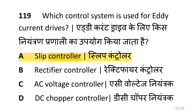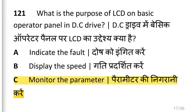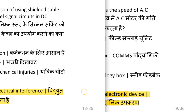Which type of machine in industries is provided with multi-motor electric drives? That is rolling machines. Which control system is used for eddy current drives? What is the purpose of the jog key in the control panel of DC drives? That is inching operation. What is the purpose of LCD on basic operator panel in DC drive? That is to monitor the parameters. What is the reason for using shielded cable for connecting low level signal circuits in DC drives? That is to eliminate electrical interferences.